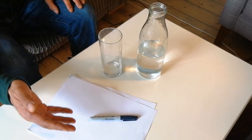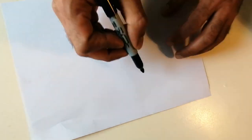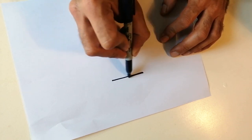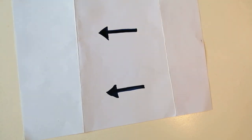What you're going to need is two sheets of paper, a marker pen, a tall drinks glass and some water. First off, draw some arrows on the paper, make them about the same width of the glass.